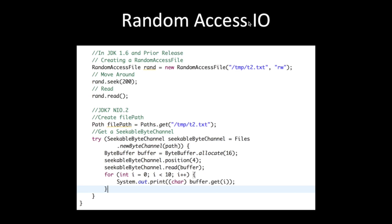For random access I/O in JDK 1.6, if we have to move around the file, we create a RandomAccessFile object, open it in a mode — in this case read-write mode — and then move using seek.